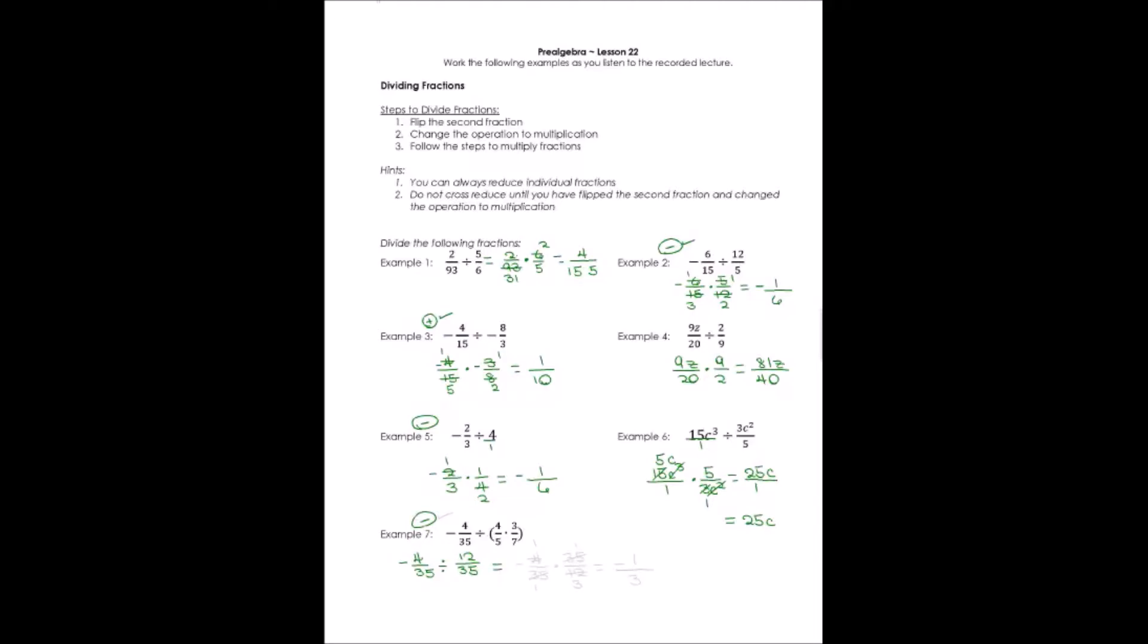So let's change this again. It's going to be -4/35 times 35/12. Well, that made things nice and easy. The 35ths, of course, would cancel and reduce and just be 1 over 1. 4 will divide into both 4 and 12.